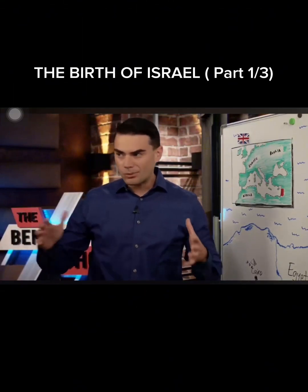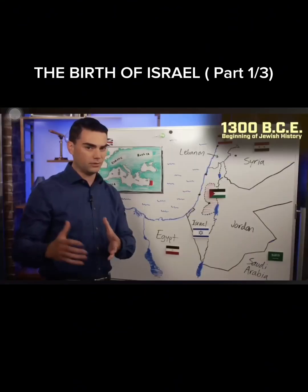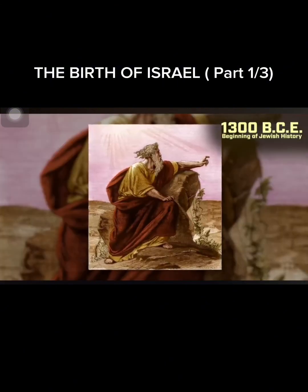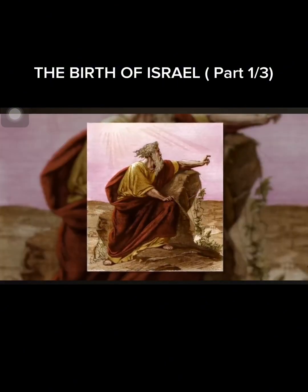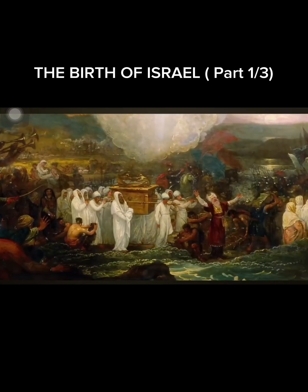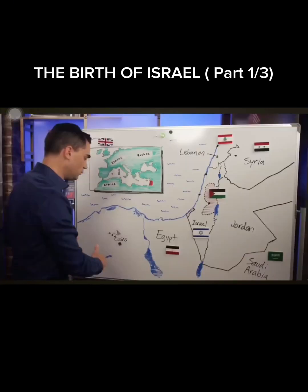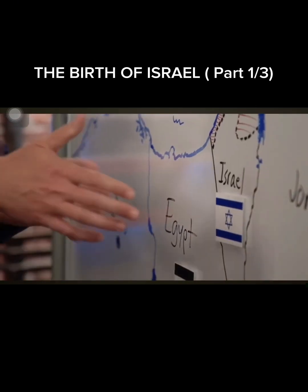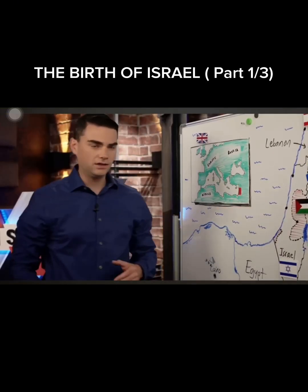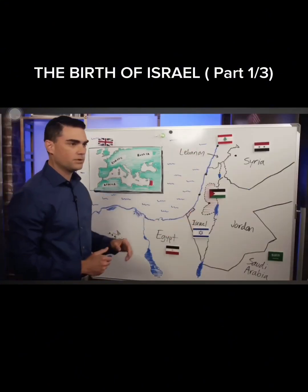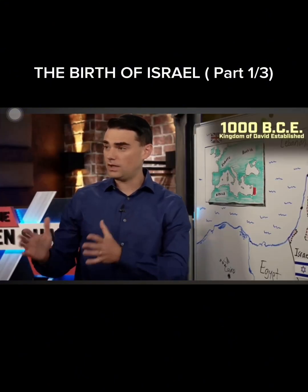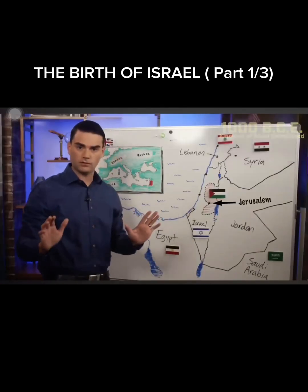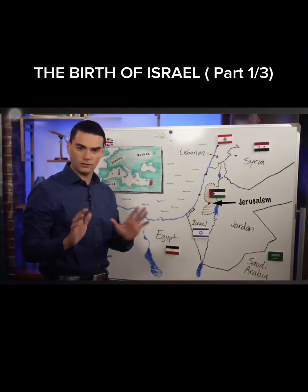The Jewish history with regard to the land of Israel begins approximately 1300 BCE, before the birth of Christ. Moses leaves Egypt somewhere around 1300 BCE. A little bit later in the century, Joshua enters the land — he crosses the Jordan River. The Jewish people pass through the Red Sea, wander in the desert, and then enter the land of Canaan. By about 1000 BCE, the kingdom of David is established, and Jerusalem becomes the capital for the first time in world history.